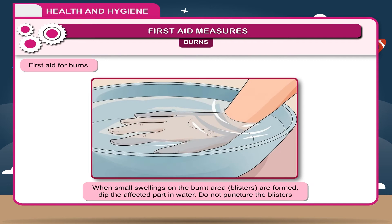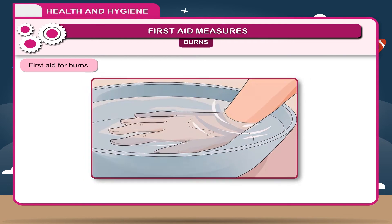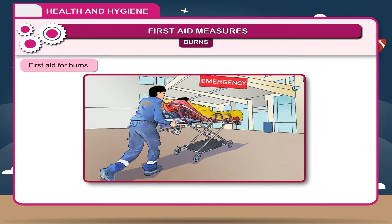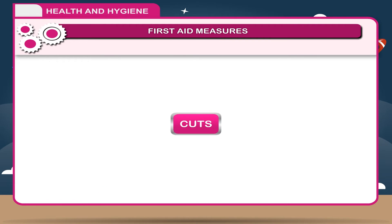4. When small swellings on the burnt area — blisters — are formed, dip the affected part in water. Do not puncture the blisters. 5. On severe burning, cover the body with clean cloth and rush to the doctor.